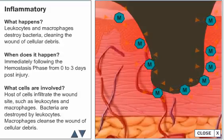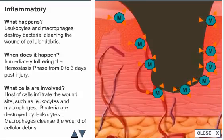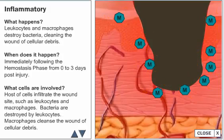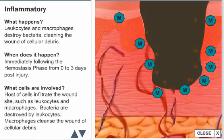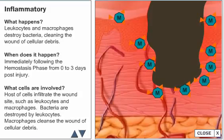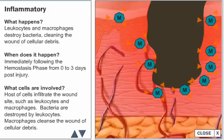Vasodilation with resultant edema, warmth, and rubor are the result of factors secreted from the macrophage and other leukocytes present at the wound site in response to the inflammatory process. The objectives of the inflammatory phase of wound healing are to clean debris and bacteria and prevent infection.